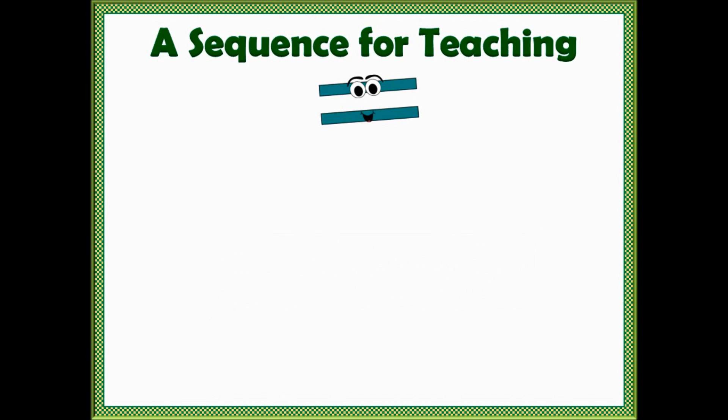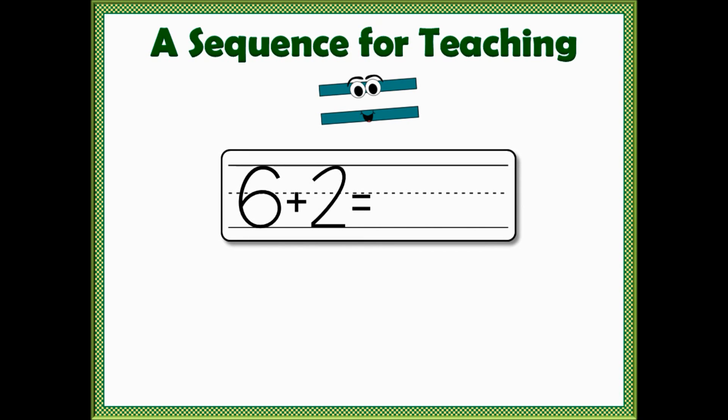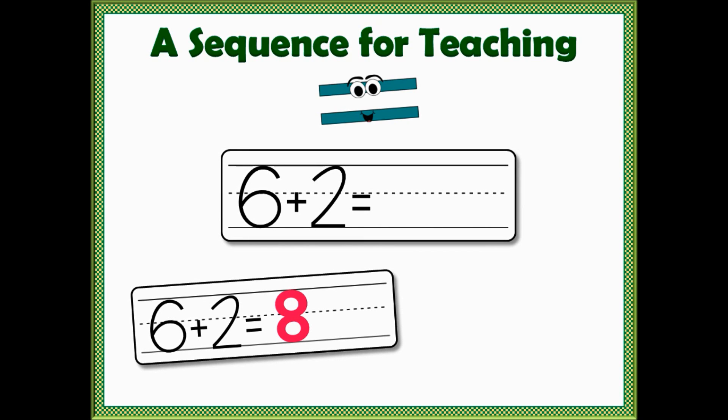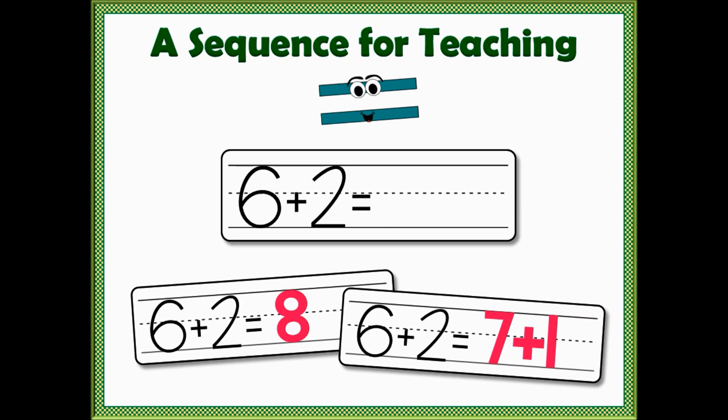After this, a good checkpoint for understanding would be to ask students to complete an equation. Some may still lean towards balancing the equation by using a single number such as eight. Others may immediately start to balance the equation in more complex ways.